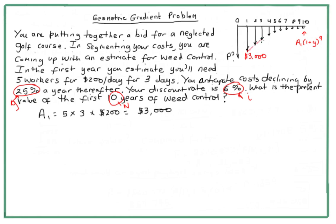This follows a geometric gradient pattern where costs get smaller every year. For example, if we wanted to know the cost in a particular year, that would be A1 times (1 + g) to the power of (n − 1). So in year ten the exponent would be nine, which works out to about $225. But if we want the present value to put into our bid on the golf course, we need the full formula.